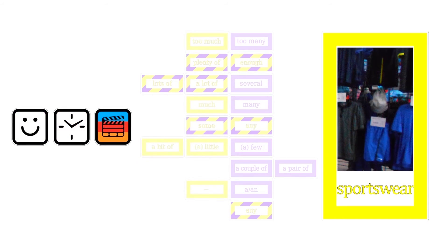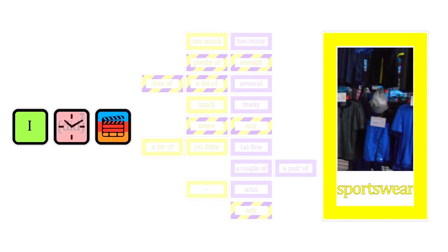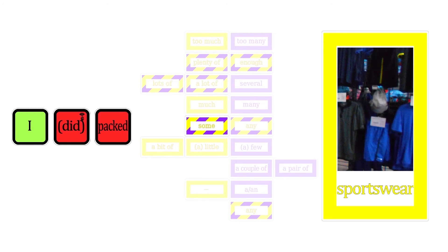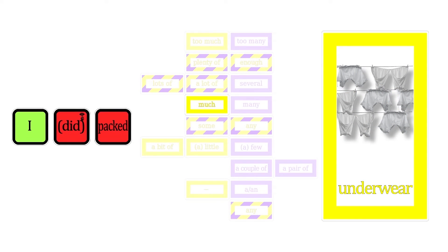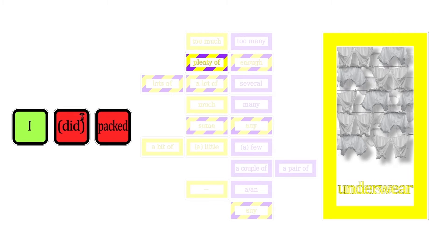However, sportswear is uncountable. I didn't pack any sportswear. I packed sportswear. I packed a bit of sportswear, or little sportswear, or a little bit of sportswear. I packed some sportswear. I'm going to use underwear this time, which is uncountable as well. I packed much underwear. I packed a lot of underwear. I packed lots of underwear. I packed enough underwear. I packed plenty of underwear. I packed too much underwear.